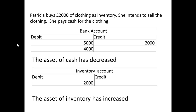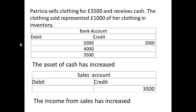She's going to buy £2,000 of clothing — we're going to call that inventory, as she intends to sell it. We credit the bank account with £2,000, so the asset of cash has decreased. But we debit an inventory account because the asset of inventory has increased. In other words, we're treating what she's bought as an asset until it's sold.